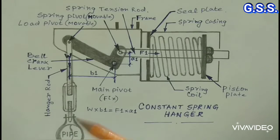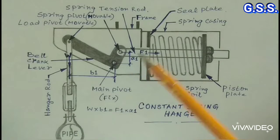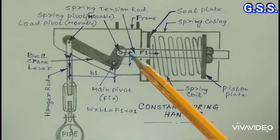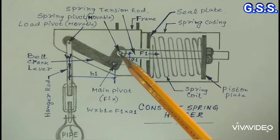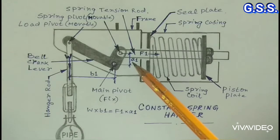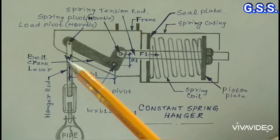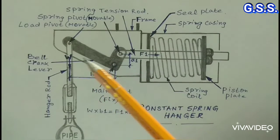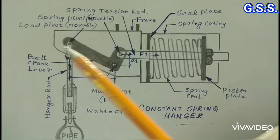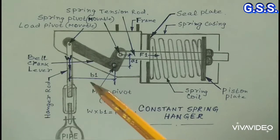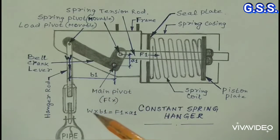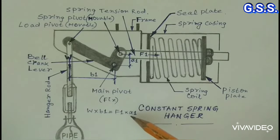Say at installed condition, spring force is F1, moment distance between spring pivot and main pivot is A1, vertical load of pipe is W, and moment distance between main pivot and load pivot is V1. So W times V1 equals F1 times A1.